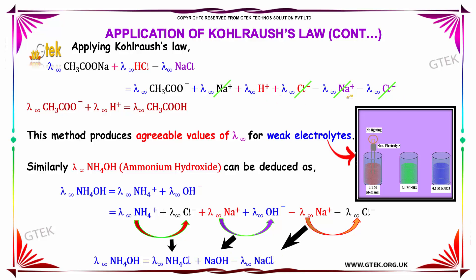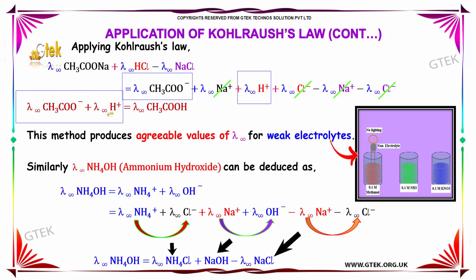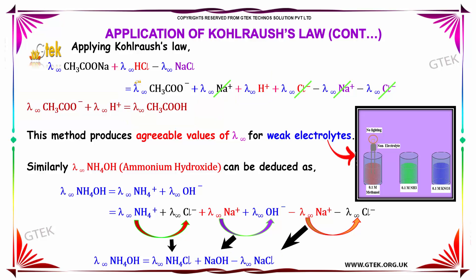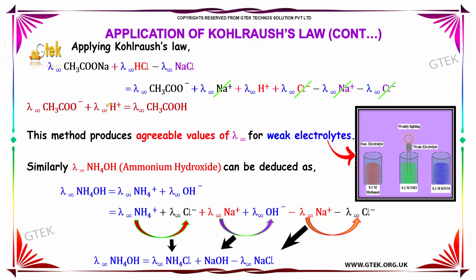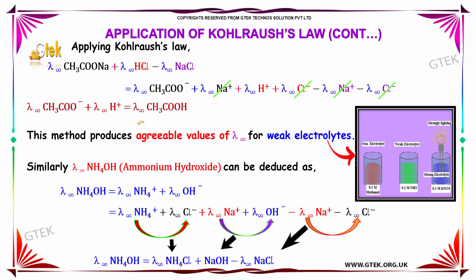After cancelling all these terms, the remaining term is the formation of acetic acid, that is lambda infinity of CH₃COOH. This is how Kohlrausch's law is applied. This method produces agreeable values of lambda infinity for weak electrolytes.